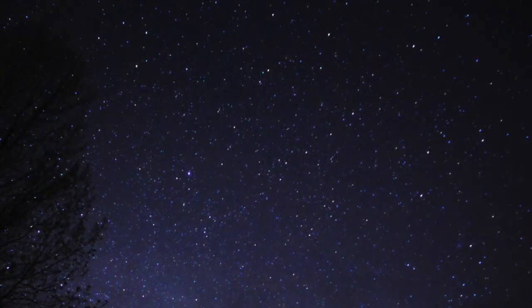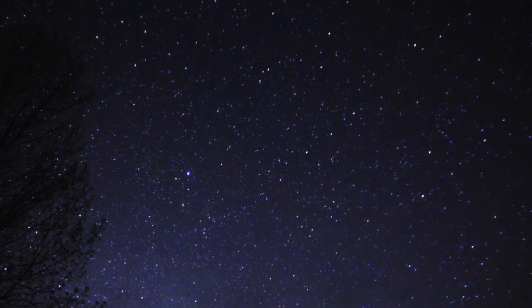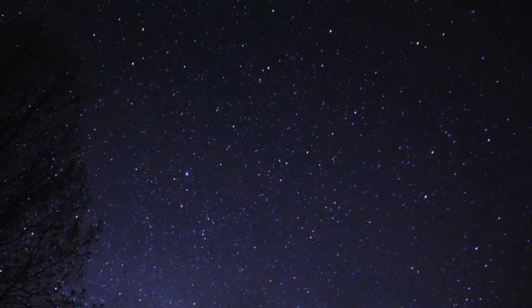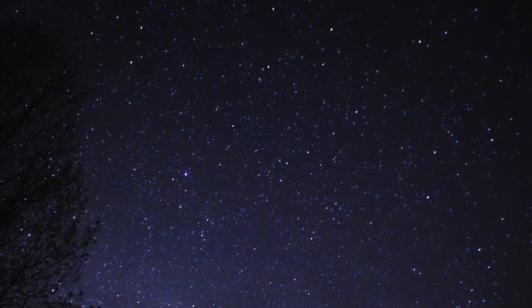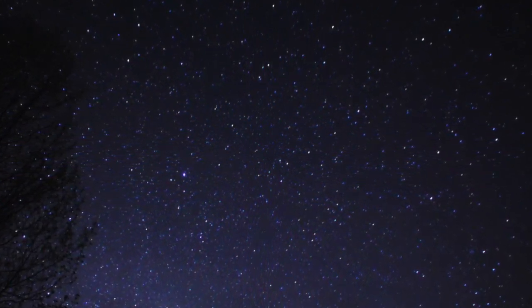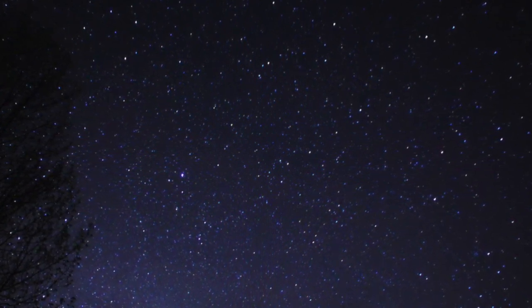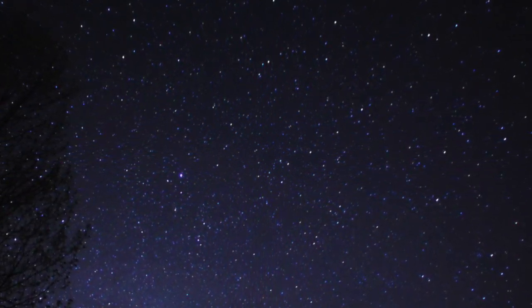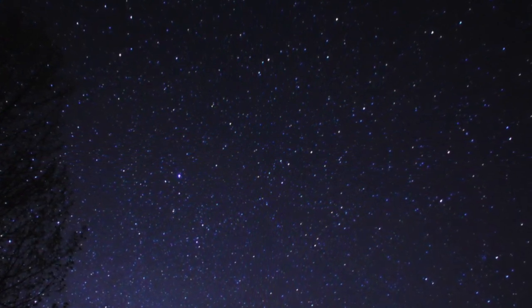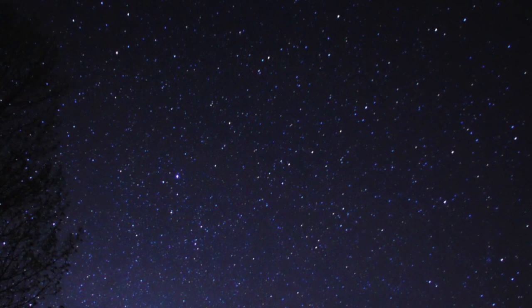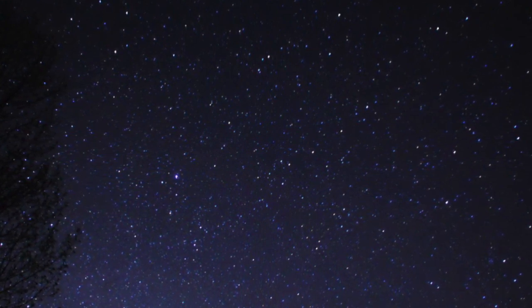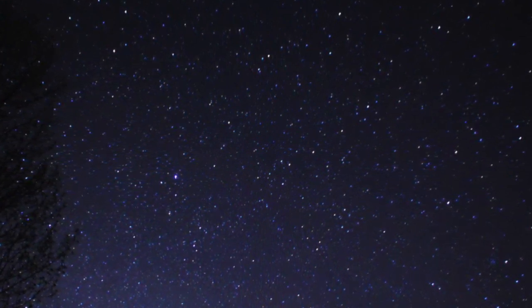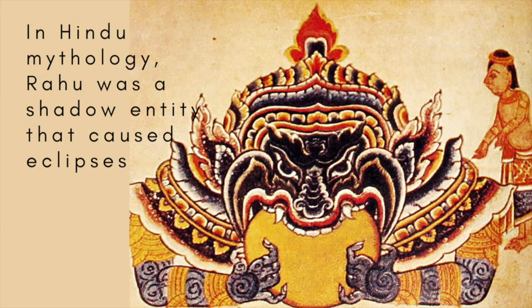The Aryabhatiya contains some incredibly modern ideas in astronomy, far ahead of their time. It argues that the planets move in elliptical paths, that the apparent rotation of objects in the night sky is due to Earth's axial rotation, and that the moon and planets shine by reflected sunlight. Aryabhata also correctly explained the causes of solar and lunar eclipses, improving upon the then-popular Indian belief that eclipses were the work of a demon called Rahu, and gave a value for the length of the year that is just a few hours longer than the one accepted today.